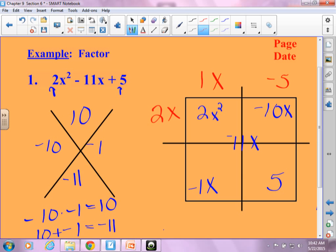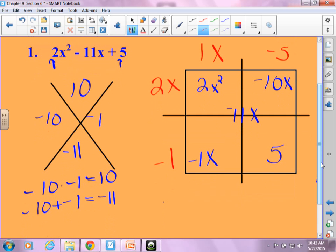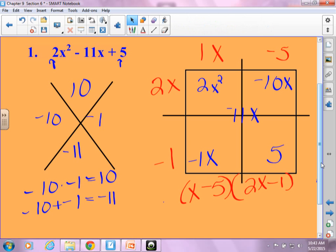And then the lower left, negative 1X times what gives me negative 1X? Negative 1. And negative 1 times negative 5 gives me 5. So it works. So when I factor it then, I get X minus 5 and 2X minus 1. And I'm done. It doesn't ask me to solve, so I don't. We will get one that does solve.